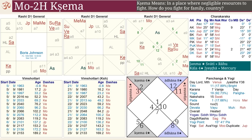We continue examining the Vimshottari Dasha in horoscopes. What we are learning right now are the modifications — specifically how we respond, and what response mechanism is built into the system when the moon is in a certain house away from a Kendra or corner. The Kendras have instant reaction on the Lagna. In the chart of Boris Johnson, the moon is in the second house.